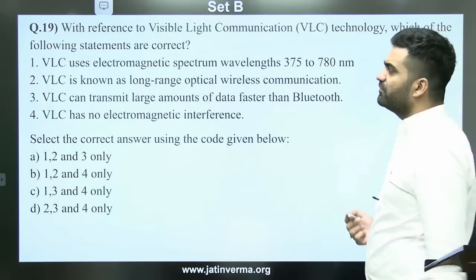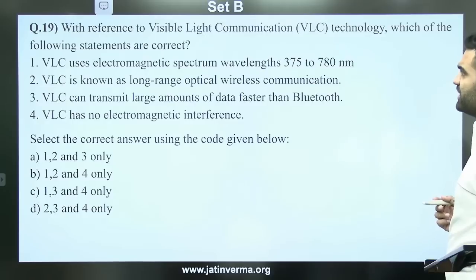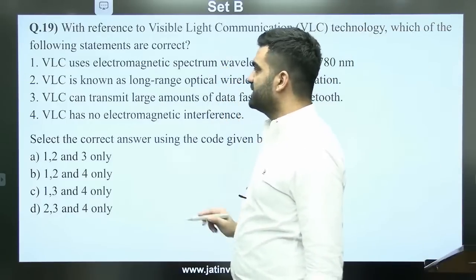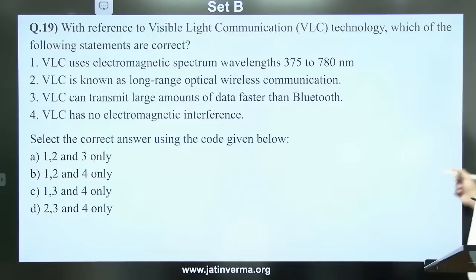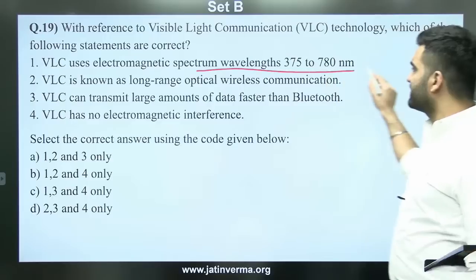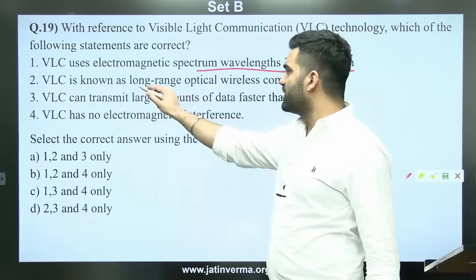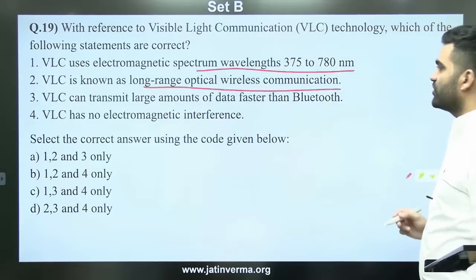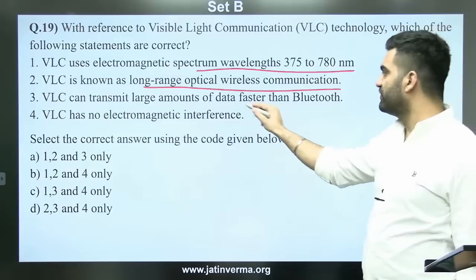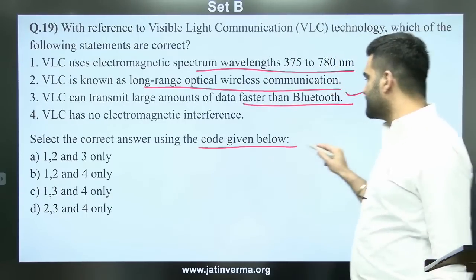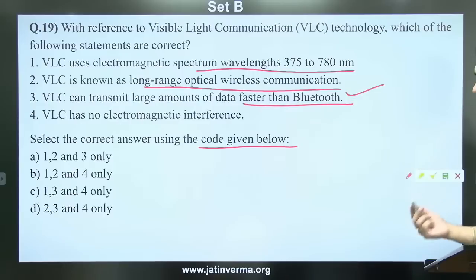Question 19: With reference to visible light communication (VLC) technology, which statements are correct? VLC uses electromagnetic spectrum wavelengths 375 to 780 nm; VLC is known as long-range optical wireless communication; VLC can transmit large amounts of data faster than Bluetooth; VLC has no electromagnetic interference. Select correct answers using the code given below. Option A: 1, 2, and 3 only.